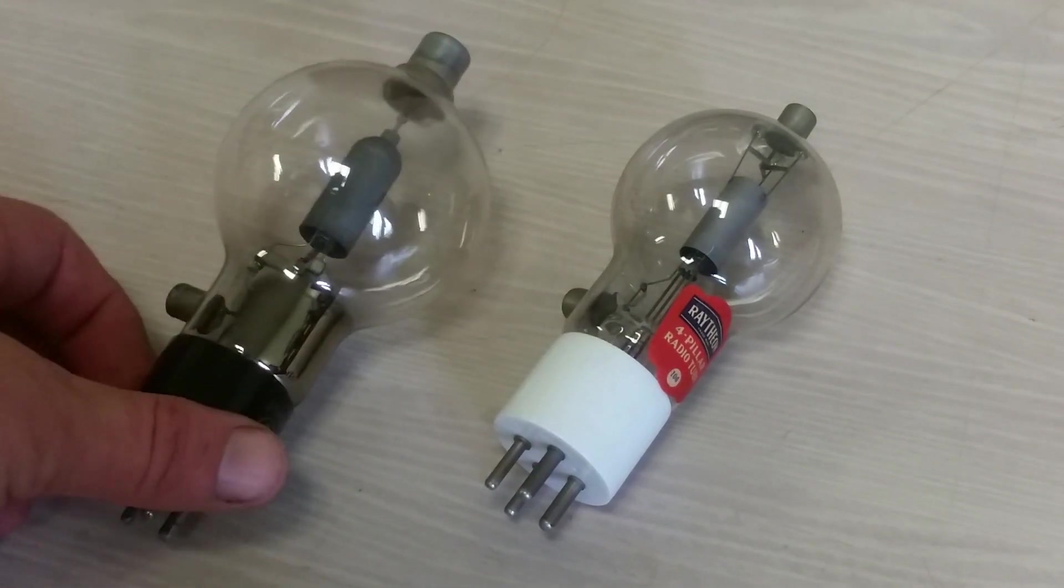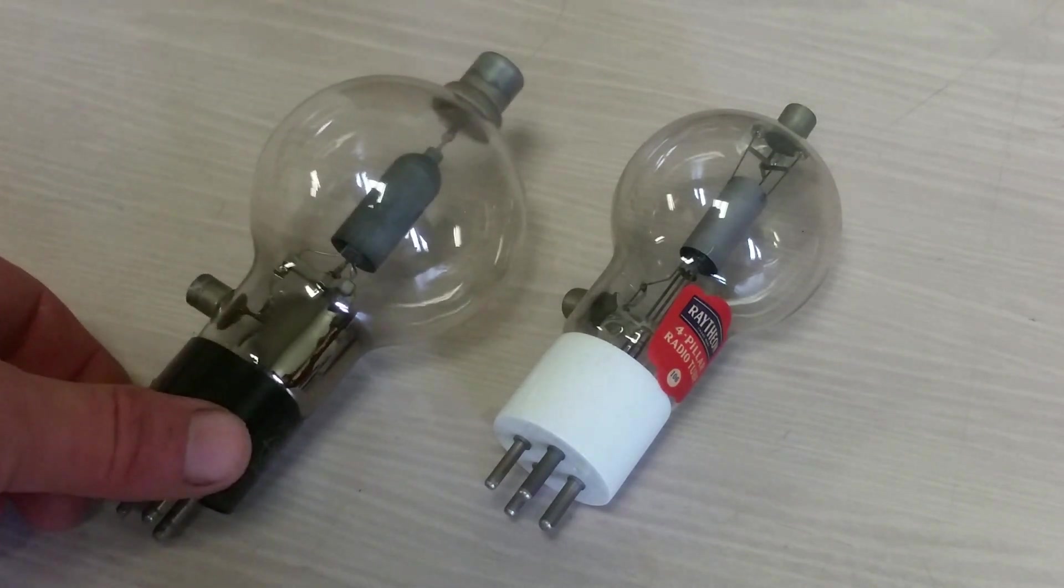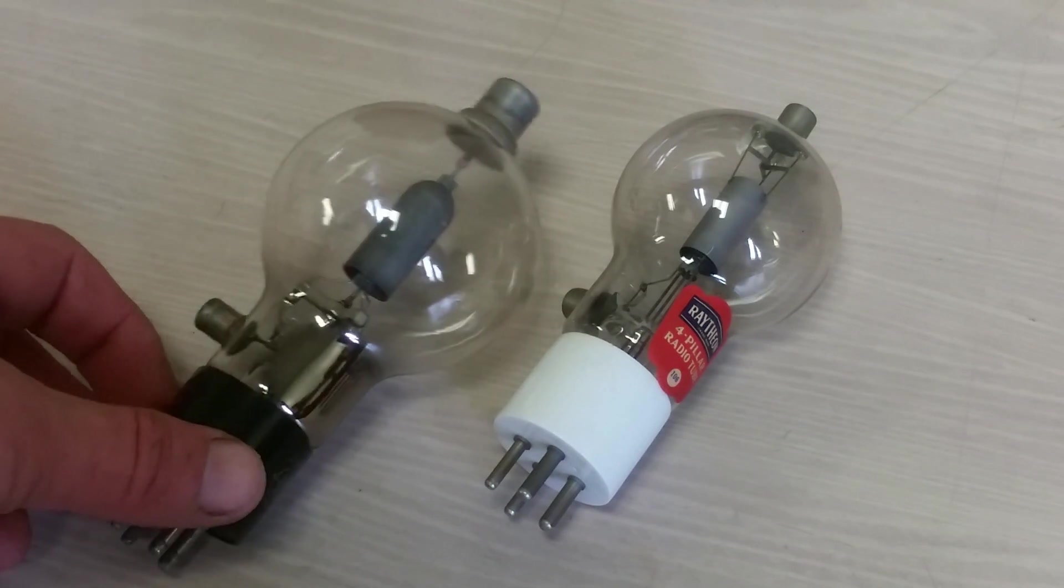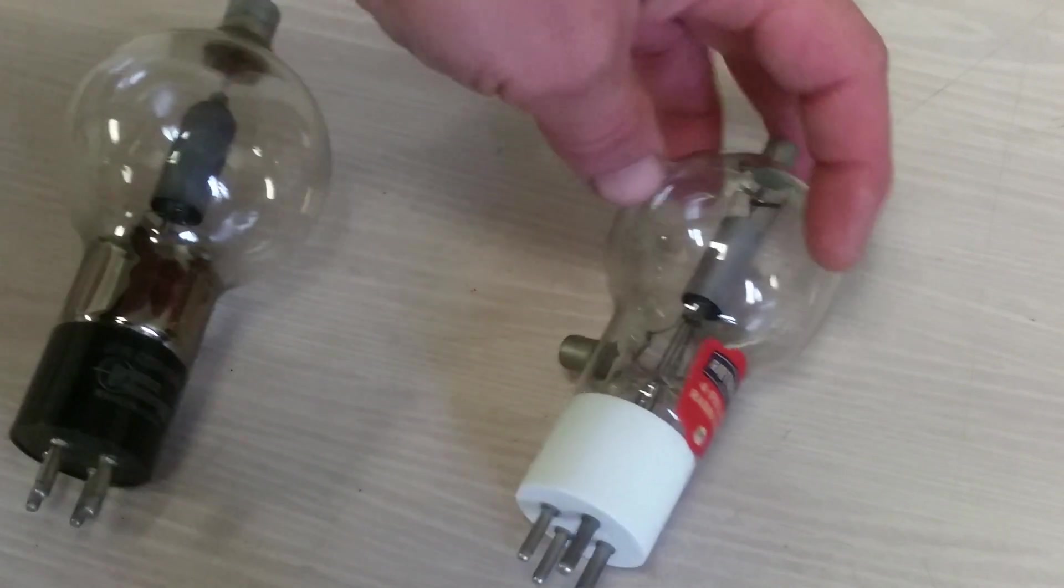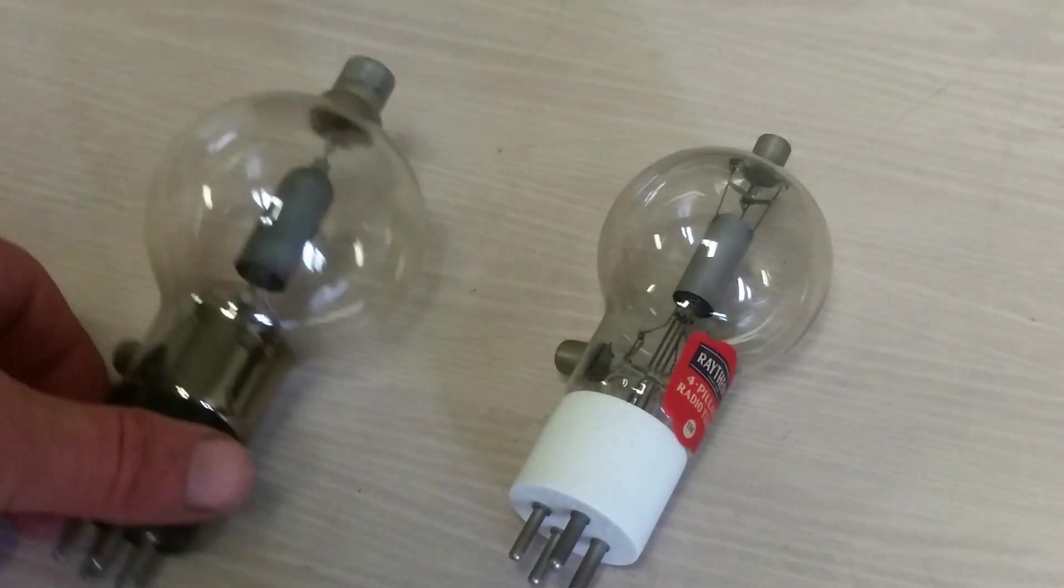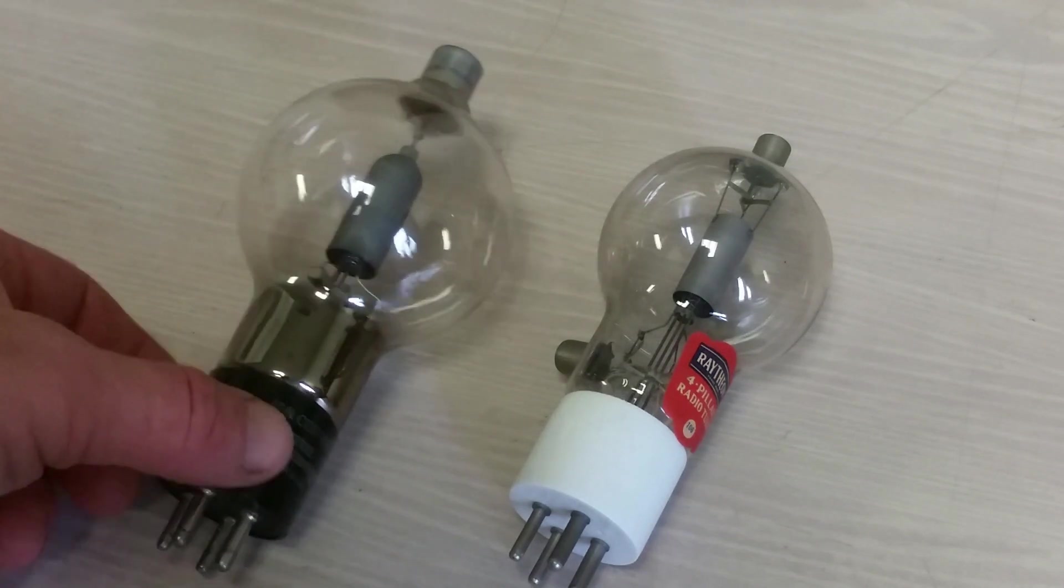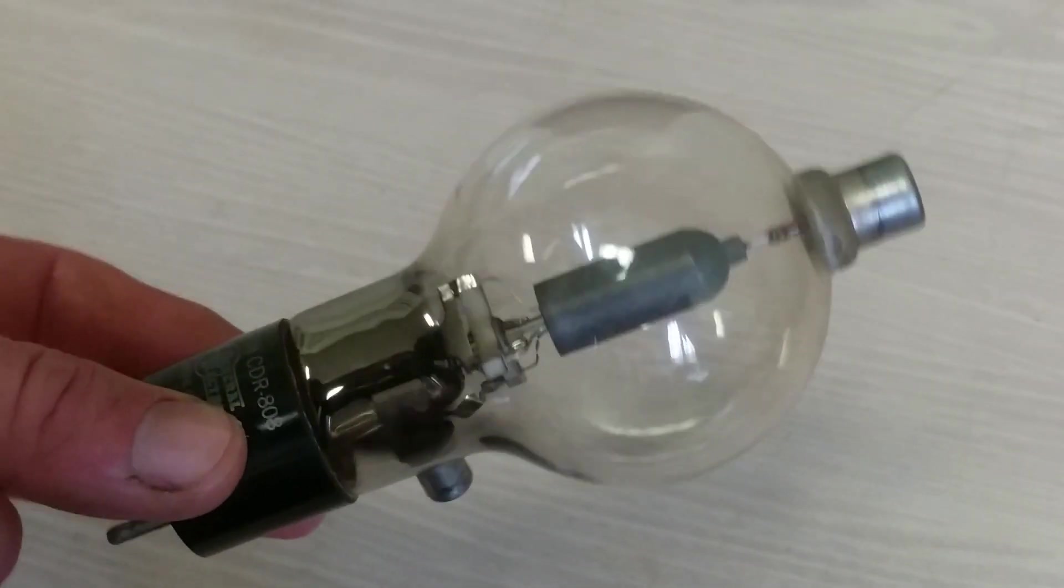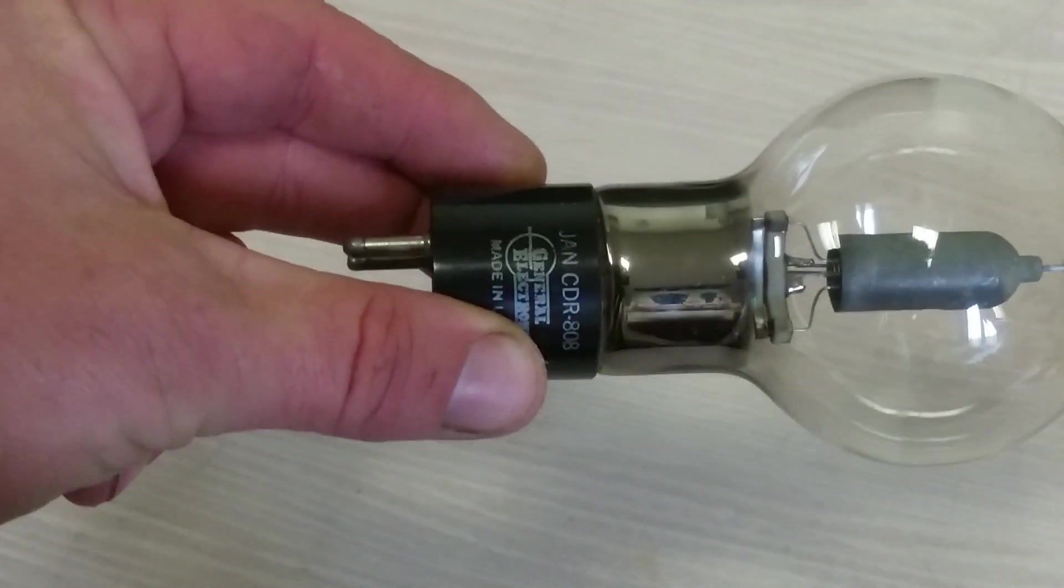Here's an 808, very similar. It's got a spherical-type bulb. I think that's called a GT bulb, I believe. And plate out the top, grid out the side. However, there's a size difference. So you can pretty much tell that it is not an equivalent to an 808.